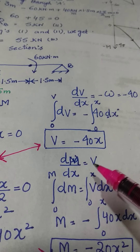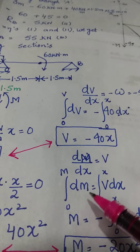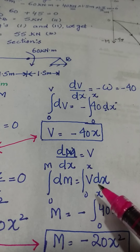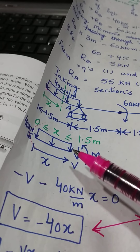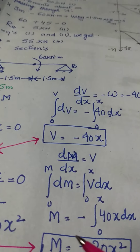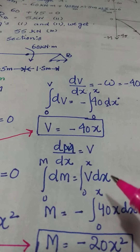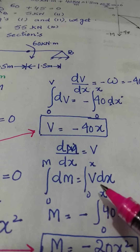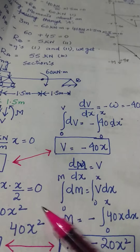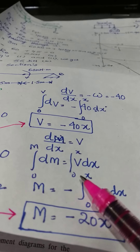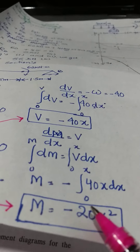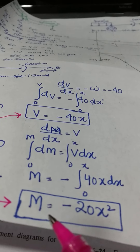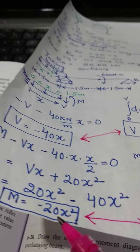We know dM/dx is equal to V, so the integral of dM is equal to the integral of V dx. At the free end, the value of bending moment is zero, so at this point let the bending moment value be M. Writing the integral from 0 to M, and the limit of integration for x goes from 0 to x, we get M equals the integral of V dx. Since V equals minus 40x, we integrate minus 40x dx to obtain M equals minus 20x squared.